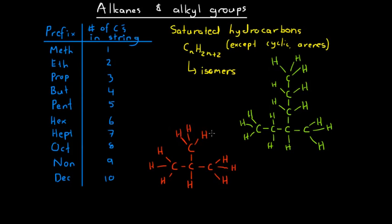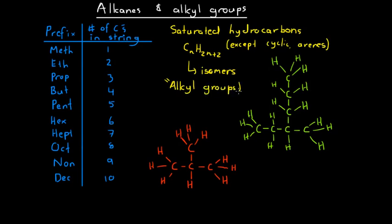An alkane will usually consist of a string of carbon atoms with hydrogens bonded off it, and sometimes we end up with a side chain. If we look here, we've got a string of three carbons with a carbon coming off as its own side chain. We call these side chains alkyl groups. Alkyl groups refer to an extra chain of carbon atoms bonded to hydrogen atoms that come off the main chain of an organic molecule.